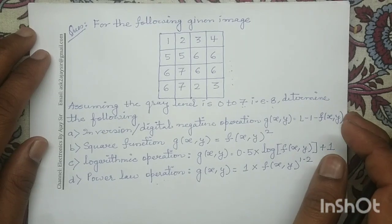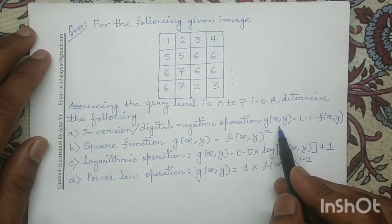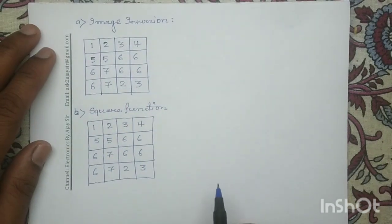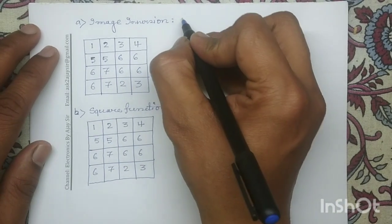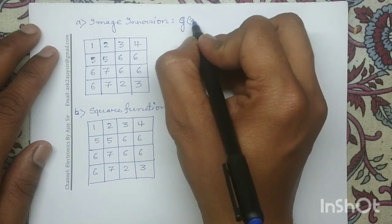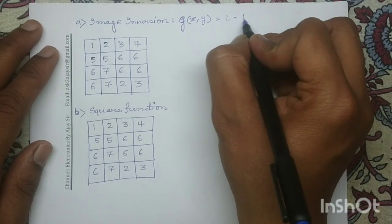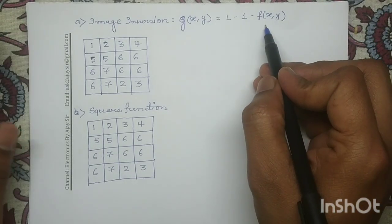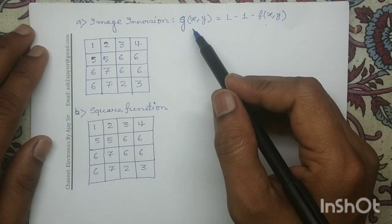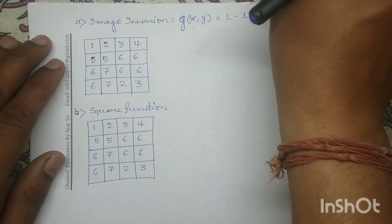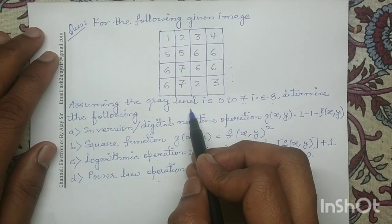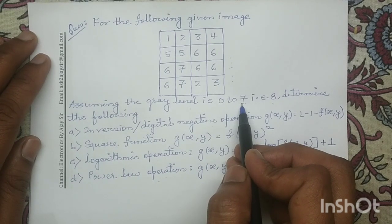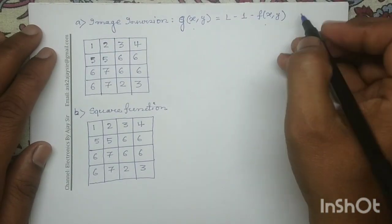First we will perform the image inversion operation. The corresponding mathematical equation is g(x,y) equals L minus 1 minus f(x,y), where f(x,y) is my two-dimensional input digital image and g(x,y) is my two-dimensional output digital image. In this question the gray level range is from 0 to 7, and if the gray level ranges from 0 to 7, the value of L equals 8.